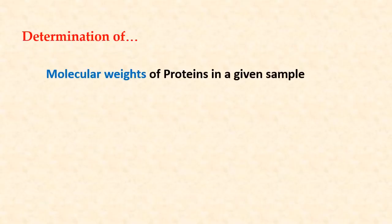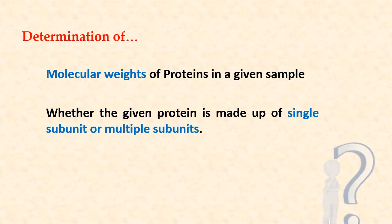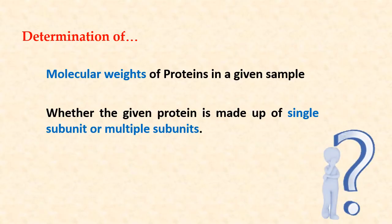But what if we want to determine the molecular weights of proteins in a given sample, or if we want to find out whether a given protein in a sample is composed of a single subunit or multiple subunits? To determine the molecular weight or number of subunits of a protein, a modified form of polyacrylamide gel electrophoresis is used.